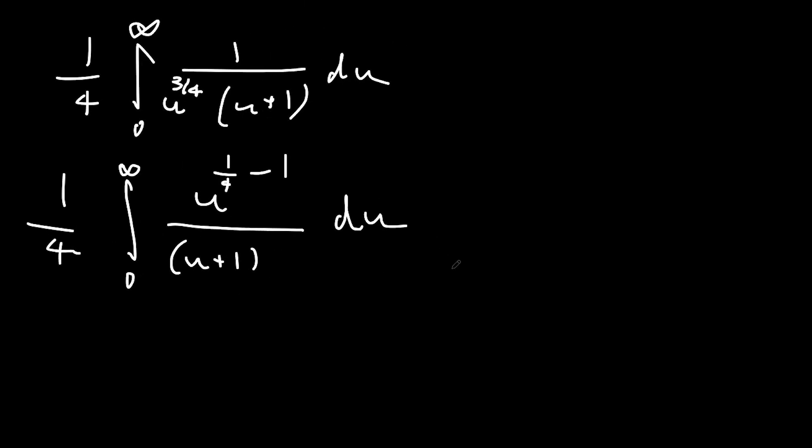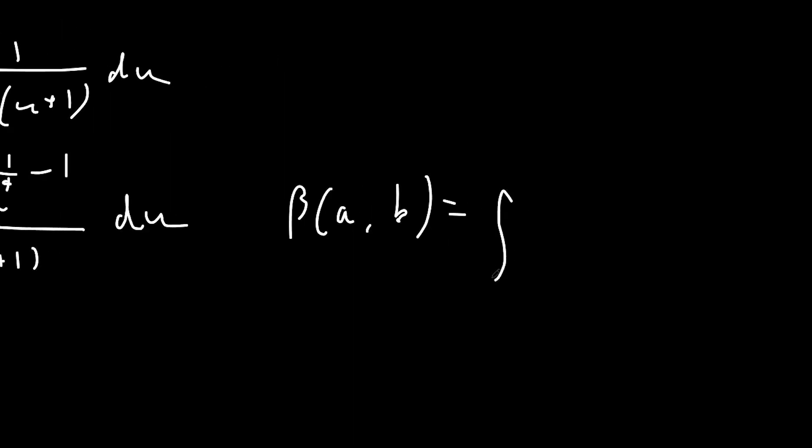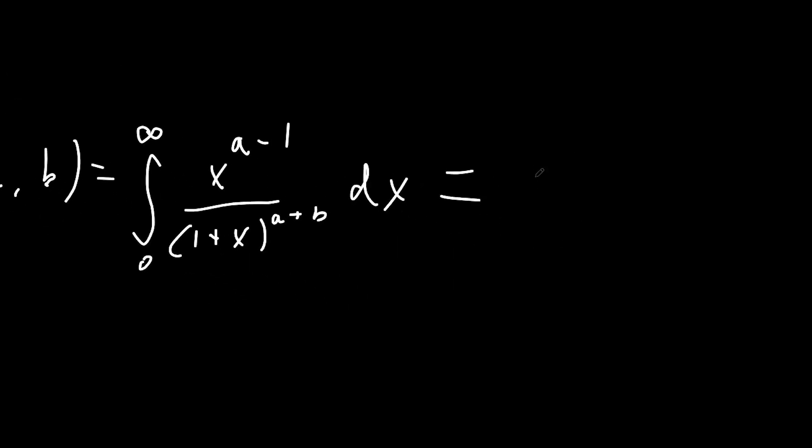Now the reason why we're doing this is so we can set up to use the beta function. So the beta function of a, b can be written as the integral between 0 and infinity of x to the a minus 1 over 1 plus x to the power of a plus b dx. And this can be evaluated as gamma a times gamma b over gamma a plus b.